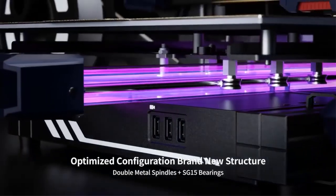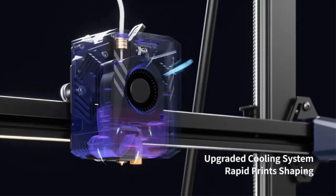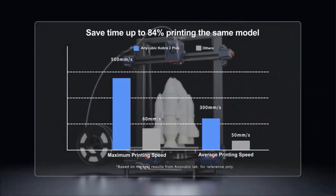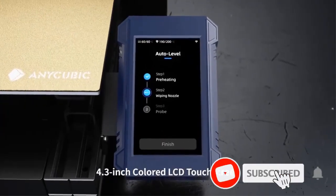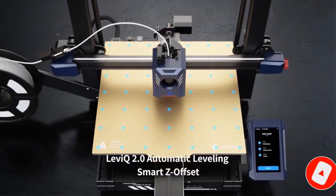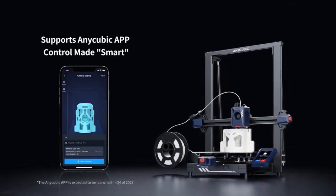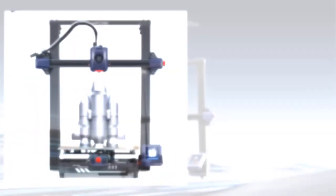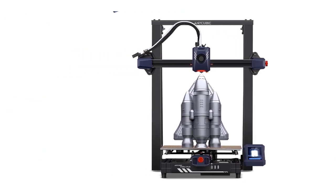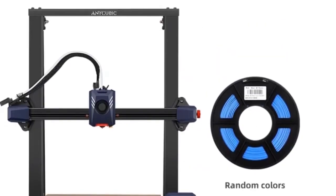AnyCubic Cobra 2 Plus boasts an impressive printing size of 320 x 320 x 400 mm (12.6 by 12.6 by 15.7 inch), can print models of approximately 41 liters in volume at one time. Full-sized printing of the same model, compared to similar products on the market with a printing speed of 50 mm per second, printing time is shortened by 31 hours 35 minutes. Efficient creation, energy saving, and environmental friendly.